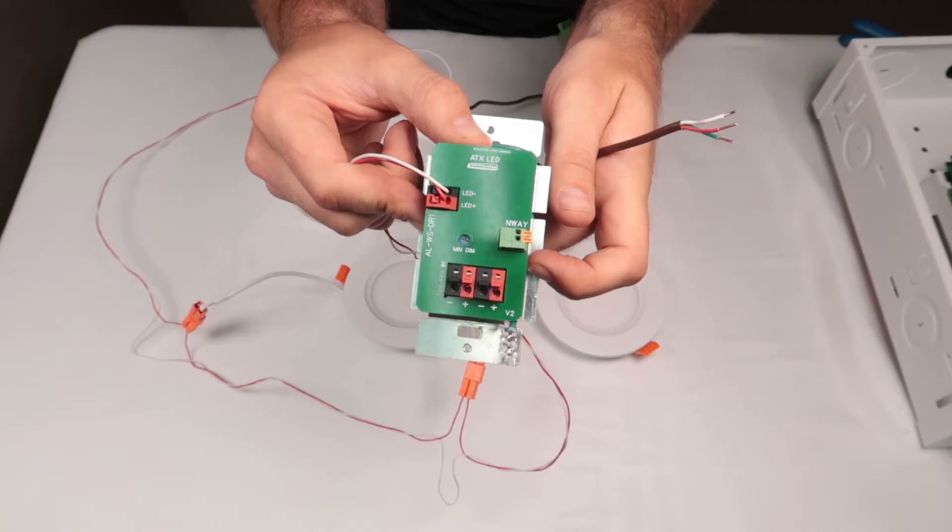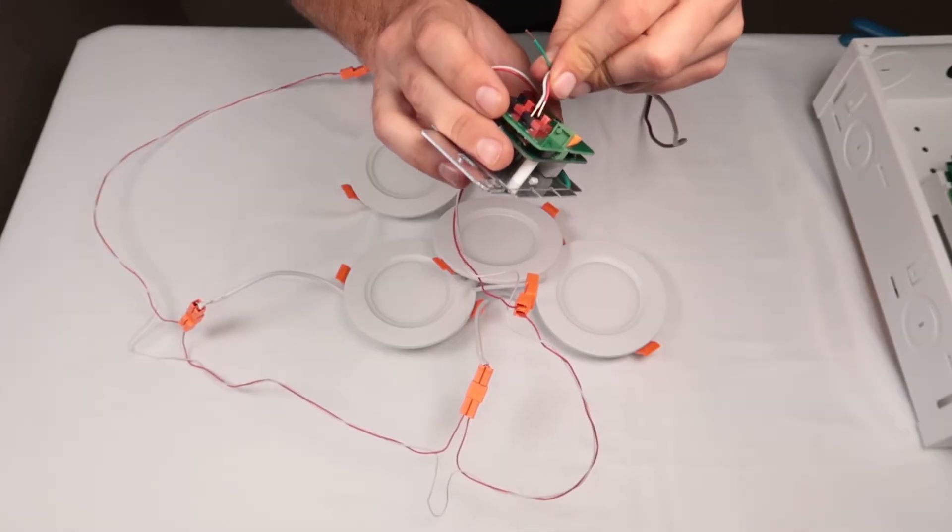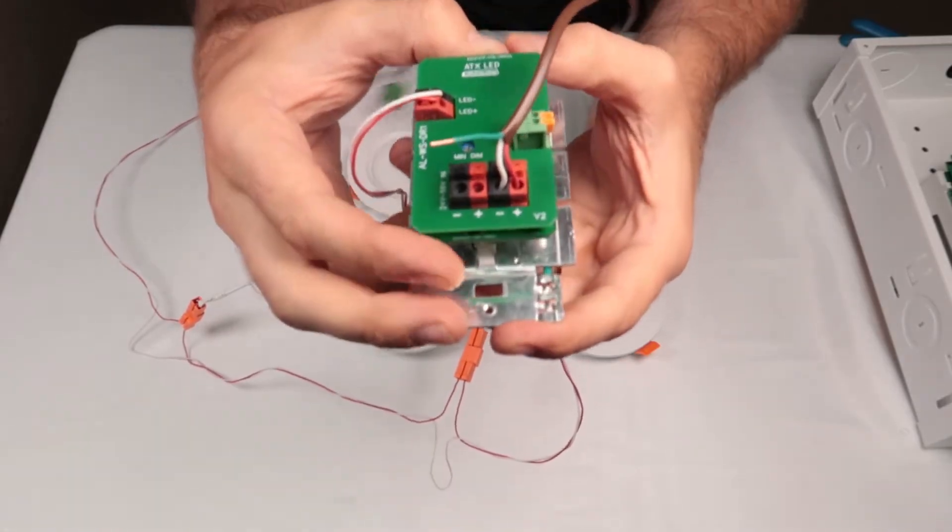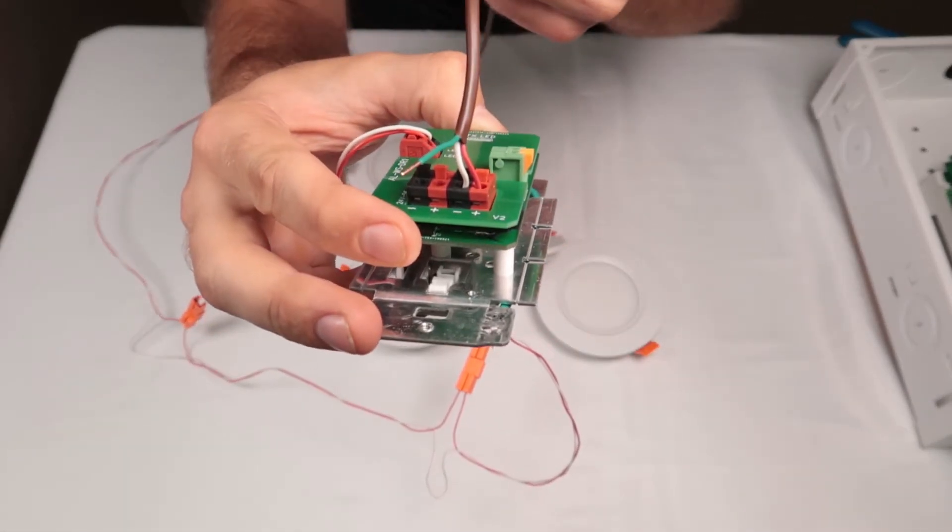Next, we will connect the home run to the switch's power terminal. Be sure that these wires are disconnected from power before you do this step. Red connects to the positive bus, and white connects to the negative bus.